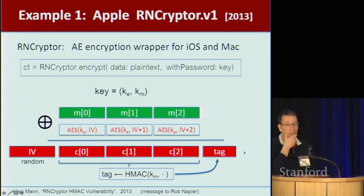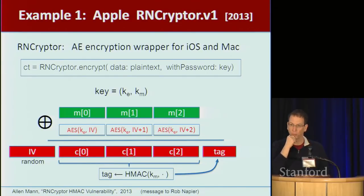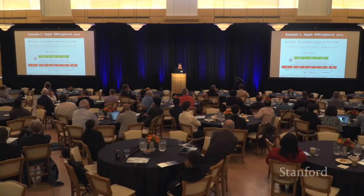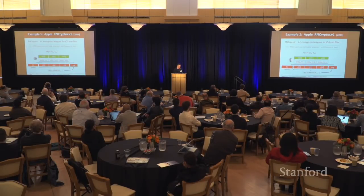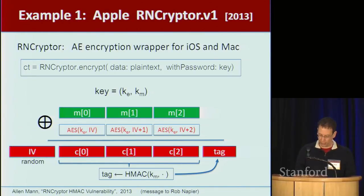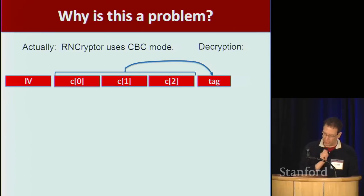Here's how the MAC is computed: we take the ciphertext, MAC it, and get our integrity tag, which we append to the ciphertext. Now, you look at this and there's something fundamentally wrong with this construction. Can someone tell me what's the problem? You notice that the MAC is computing an integrity tag over the ciphertext, but it's ignoring the IV. The IV is actually part of the ciphertext generated by the encryption algorithm, but somehow the IV did not make it into the integrity tag computation.